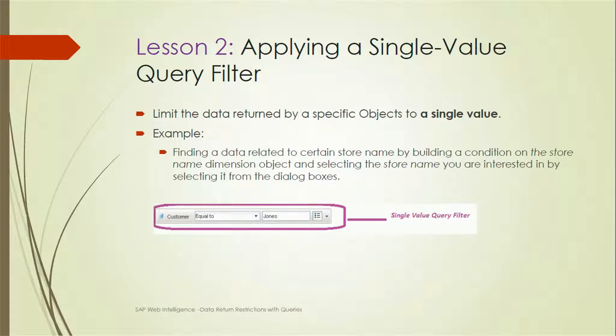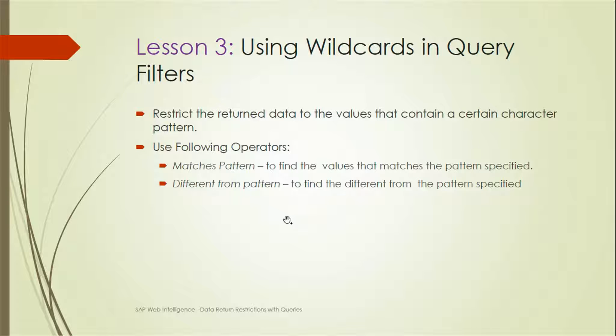How can we apply a single value query filter? A single value query filter restricts data returned by a specific object to a single value. For example, finding data related to a certain store name by building a condition on the store name dimension object and selecting the store name you are interested in from the dialog box.